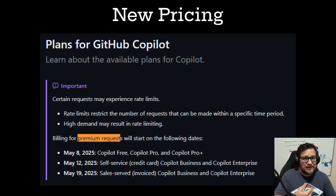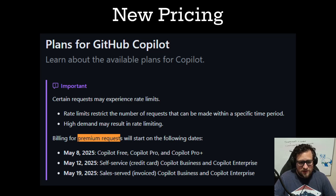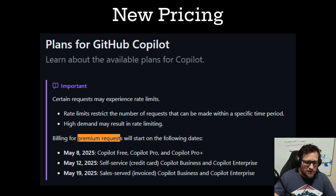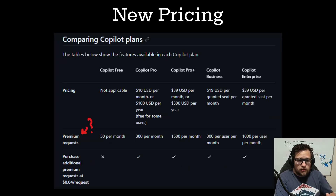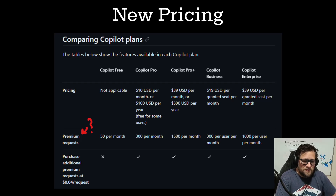They are increasing pricing and releasing a new pricing scheme that kicks in in just a couple of days. I've highlighted 'premium requests' here because nowhere can I find what a premium request actually is. I asked AI to search for it and the best answer I got is that it's messages you type in and tool calls. If this pricing change includes tool calls, this is going to be awful. My hope is that it's just chat messages. So on Copilot Pro, which is what I'll be on, I get 300 per month — for $10, maybe that's not the worst deal, unless it is tool-call related.